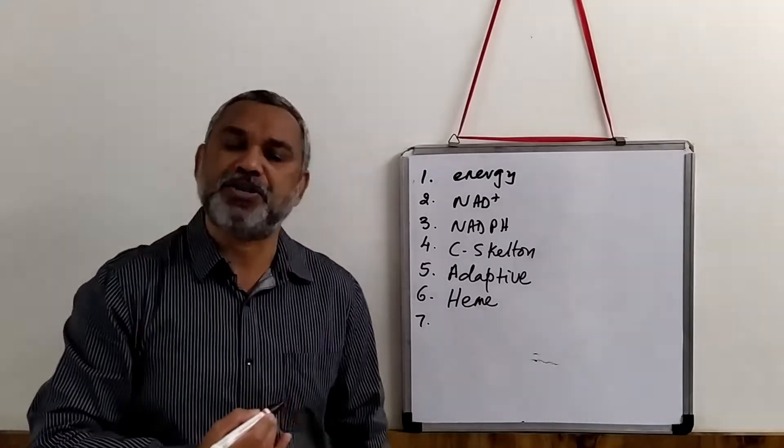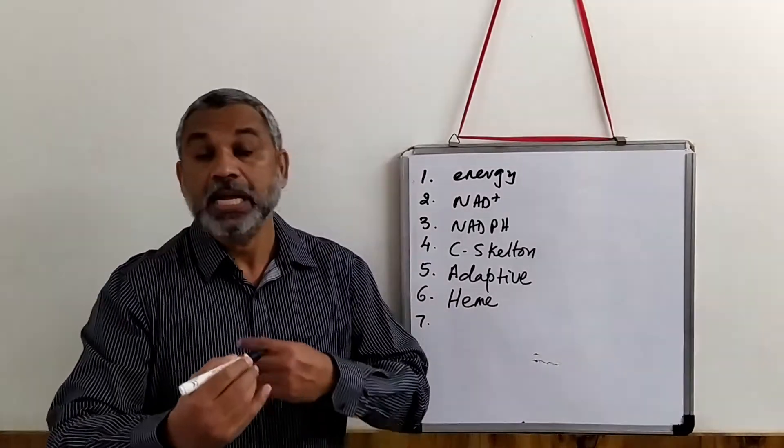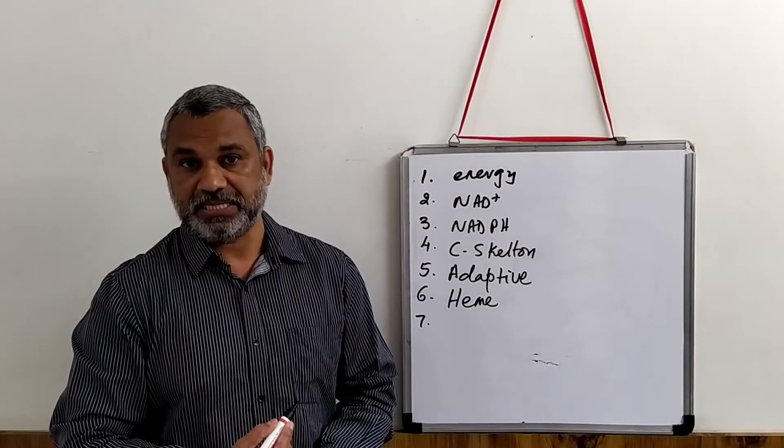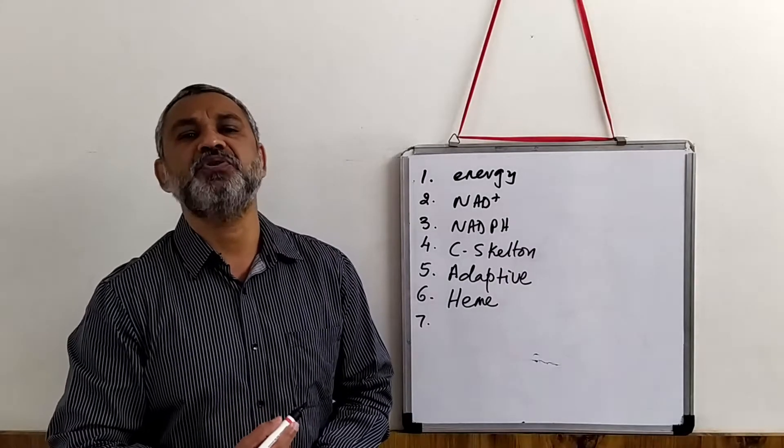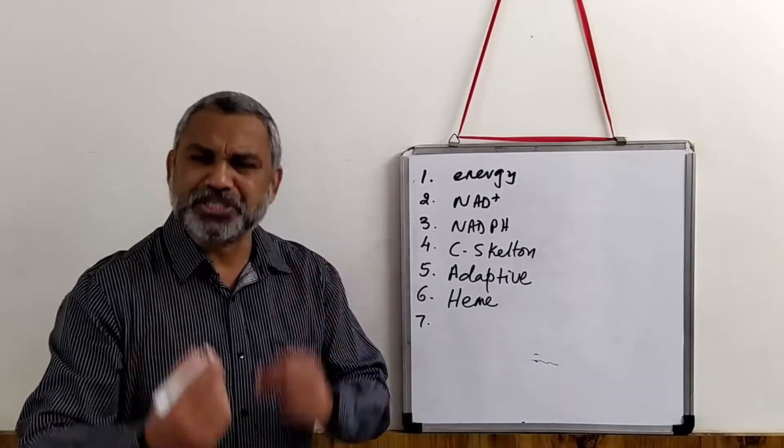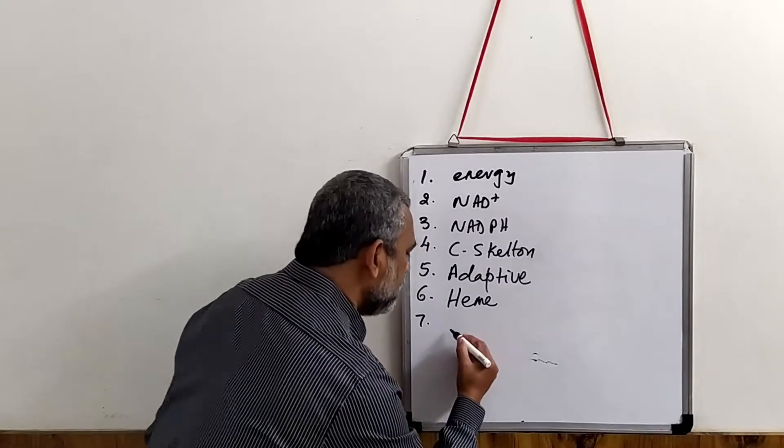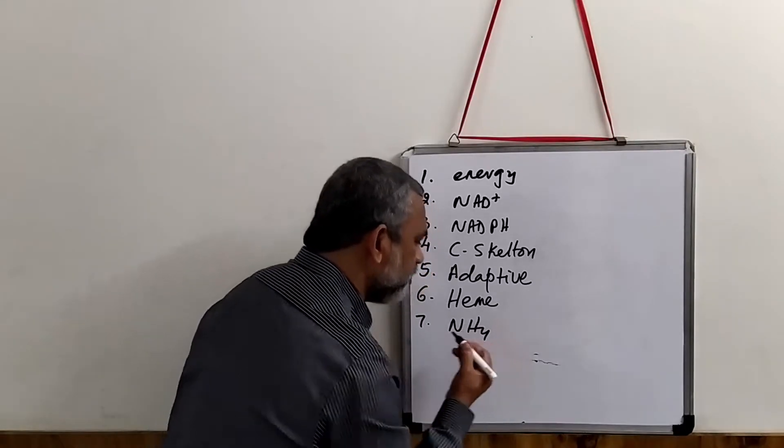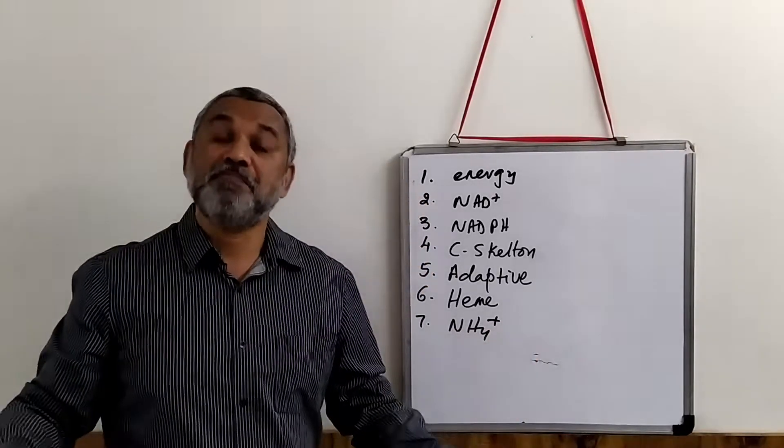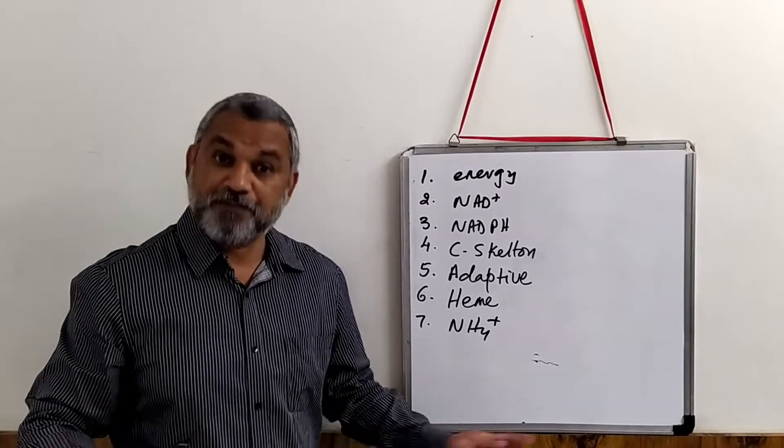Another important function of mitochondria is to deal with the urea cycle. Two important reactions of urea cycle, especially for removal of ammonium remains, is another important function of mitochondria.